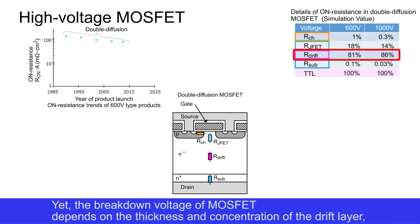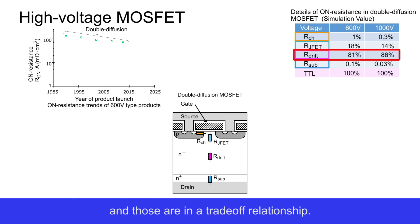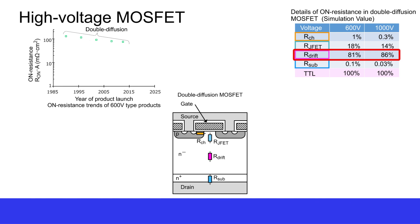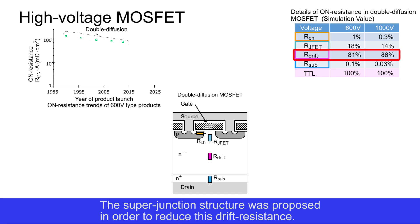The breakdown voltage of MOSFETs depends on the thickness and concentration of the drift layer, and those are in a trade-off relationship. Therefore, it has been difficult to reduce on-resistance while maintaining breakdown voltage. The super junction structure was proposed in order to reduce this drift resistance.